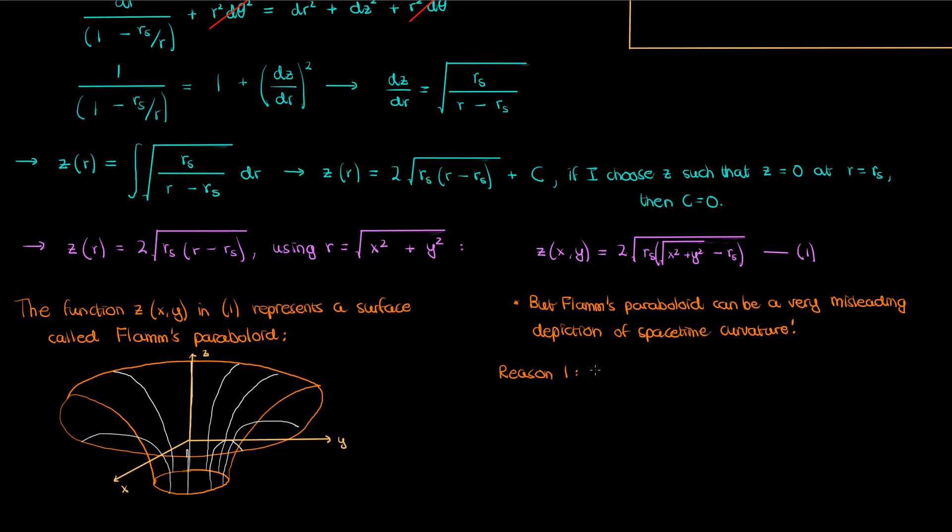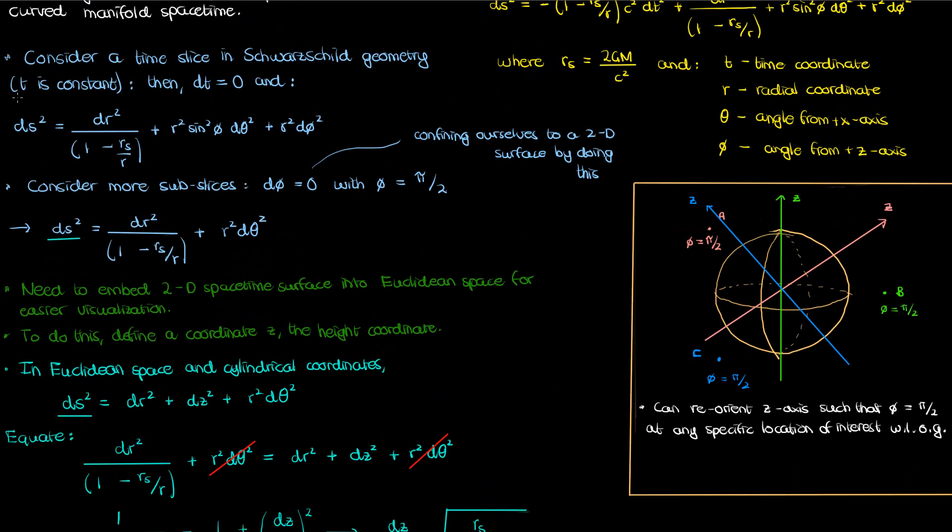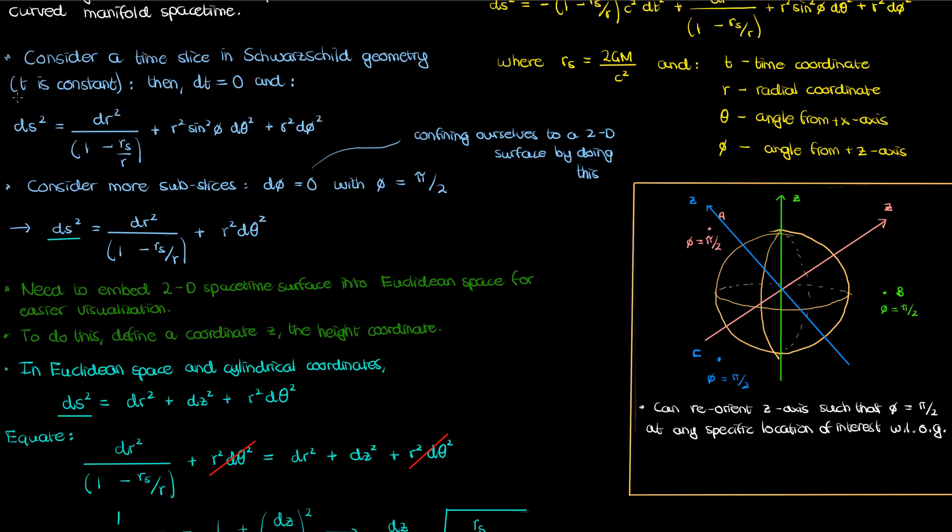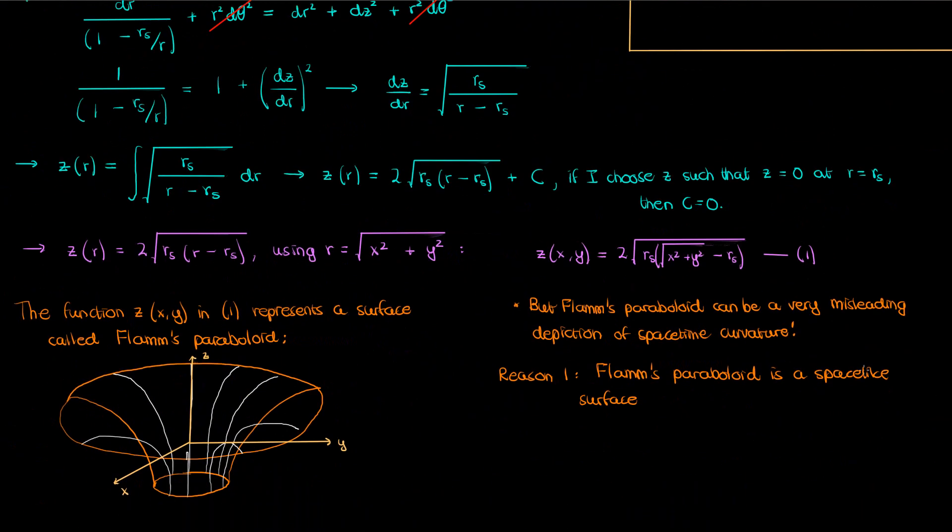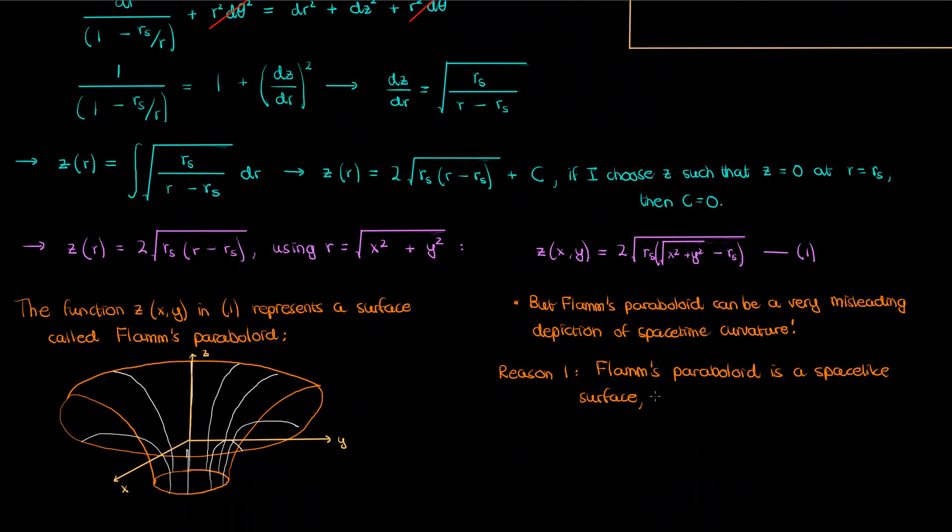So one reason that using Flamm's paraboloid is risky is that the surface Flamm's paraboloid represents is a space-like surface. If we go back up to our derivation for the equation of Flamm's paraboloid, we'll actually see that we set dt to 0 as one of the first steps to isolate a time slice in Schwarzschild geometry. This was done to simplify things by just looking at a single time slice, but when the dt, the time separation between two events, is 0 and your spatial separations are non-zero, that means that any two events occurring on Flamm's paraboloid are space-like separated, and if they're space-like separated those events cannot be causal.